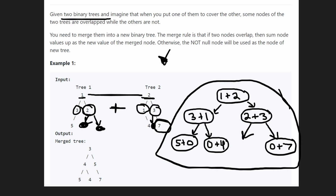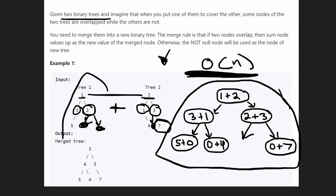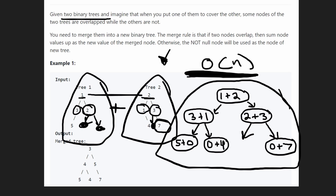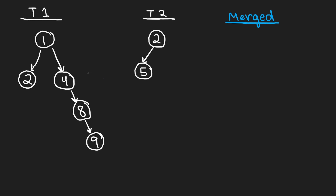And then I'm going to show you the code. You can see that we're doing this in O of N time because we're just having to traverse the entire tree of each of the trees that we're given. So in actuality, you could say it's N plus M, where N is the number of nodes in this tree and M is the number of nodes in this tree. So we are going to do this recursively.